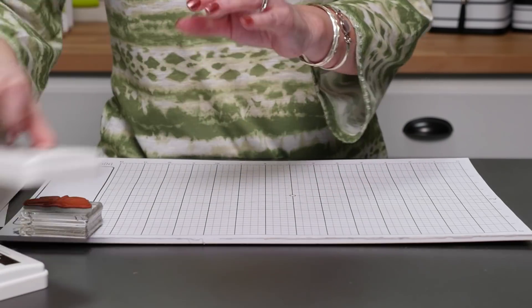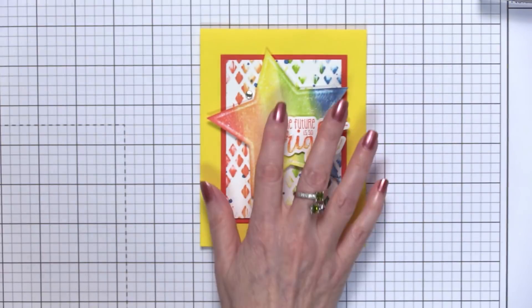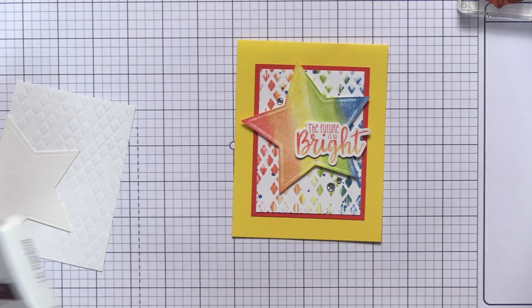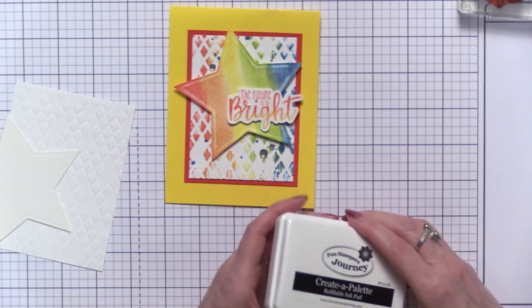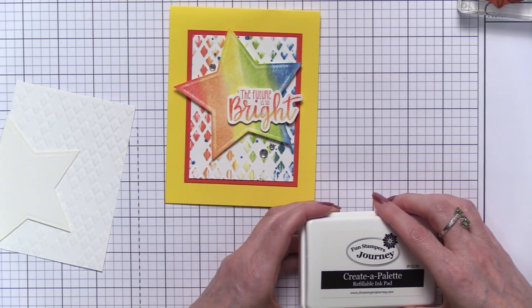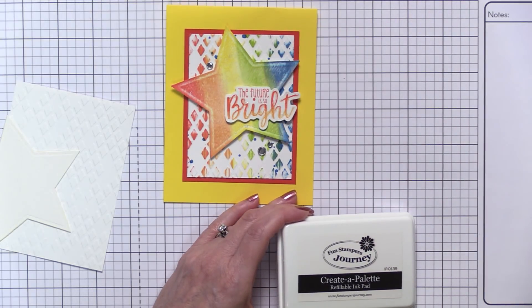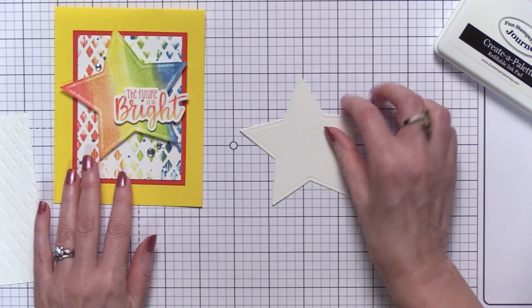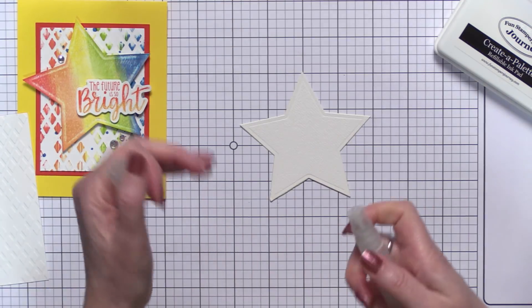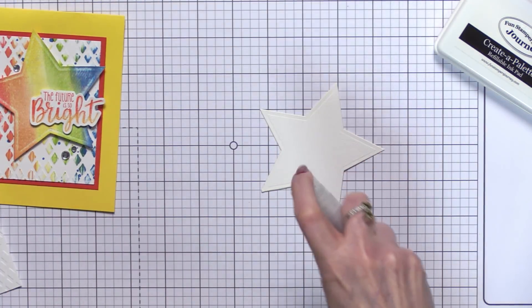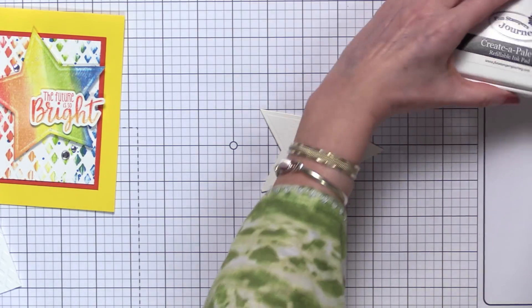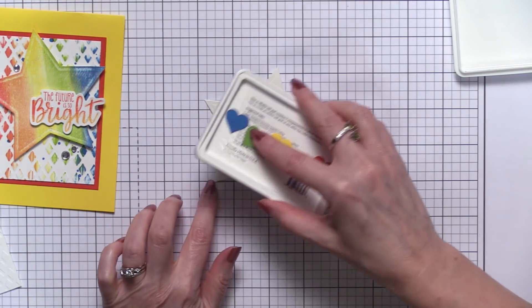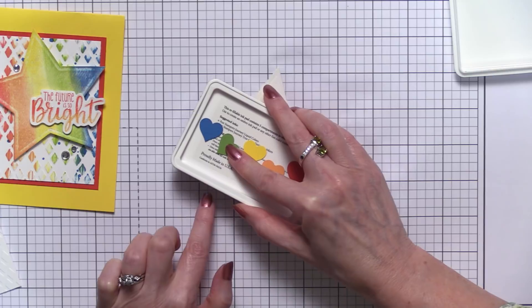So let me show you one last project and this one actually uses a palette that was inked with the liquid colors. One advantage of using a liquid color palette is you can play around with watercoloring techniques. For instance, this star is die-cut out of our water splash paper and we just lightly misted it.